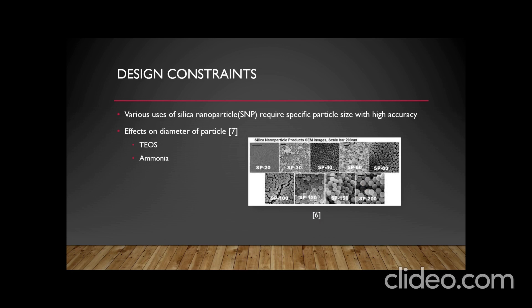Various uses of silica nanoparticles require specific particle sizes with a very narrow distribution. The concentration of TEOS and ammonia both affect the size of the particles. Increasing the concentration of either reagent increases the rate of hydrolysis and condensation. The rapid hydrolysis will increase the intermediate concentration until it reaches the supersaturated region, speeding up consumption through condensation and shortening the nucleation period. In short, this means fewer nuclei are formed and the final particle size will be greater.